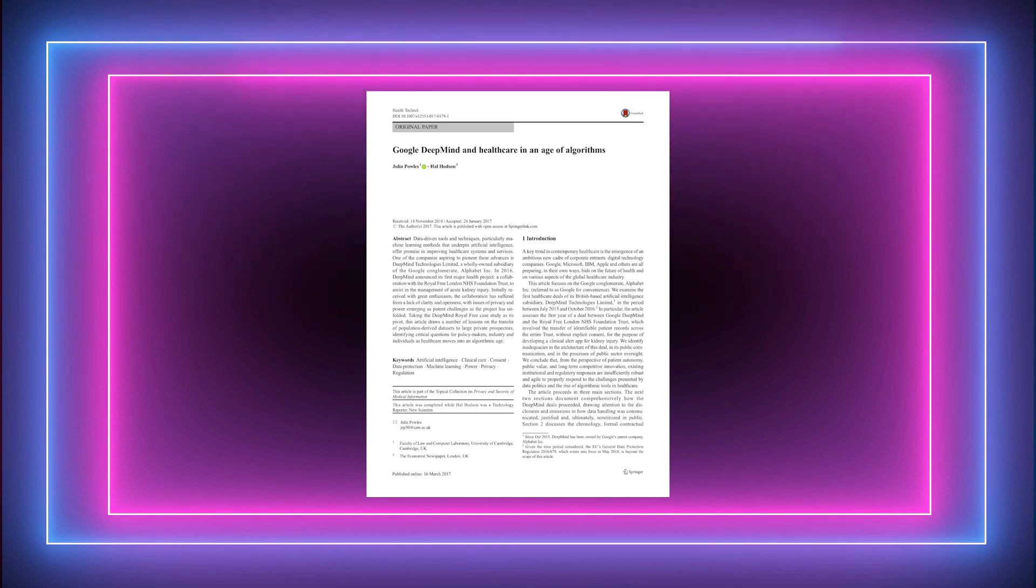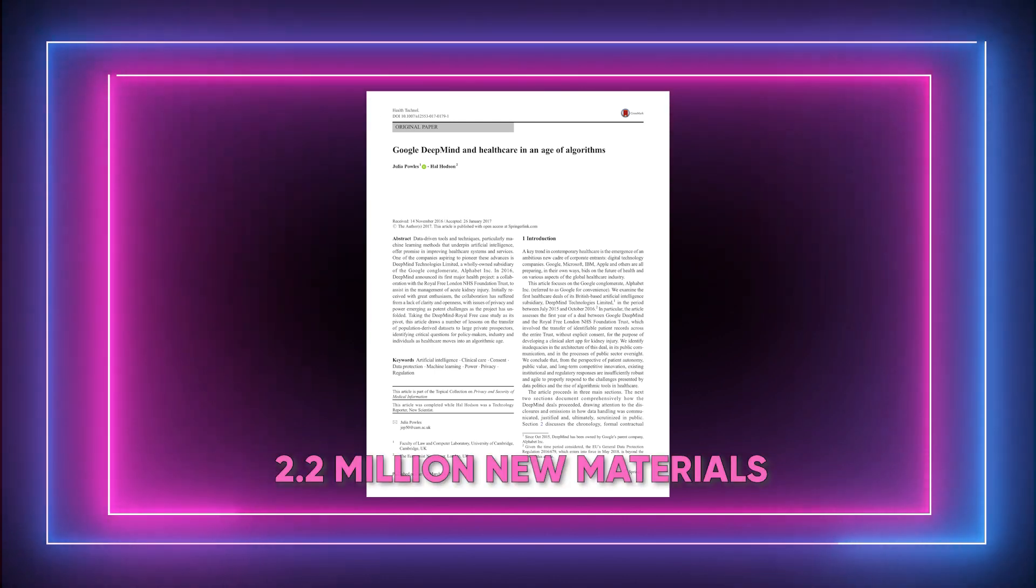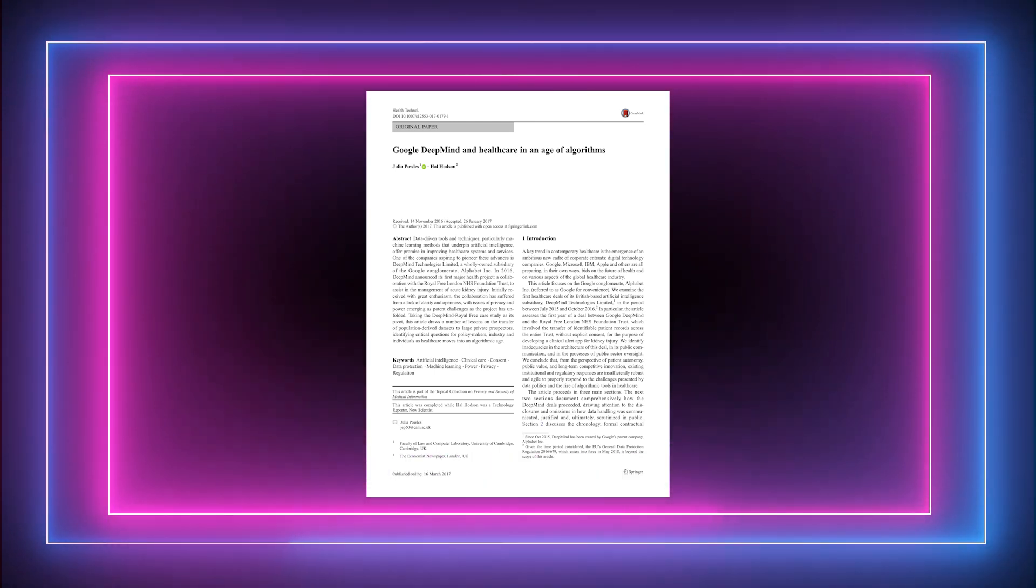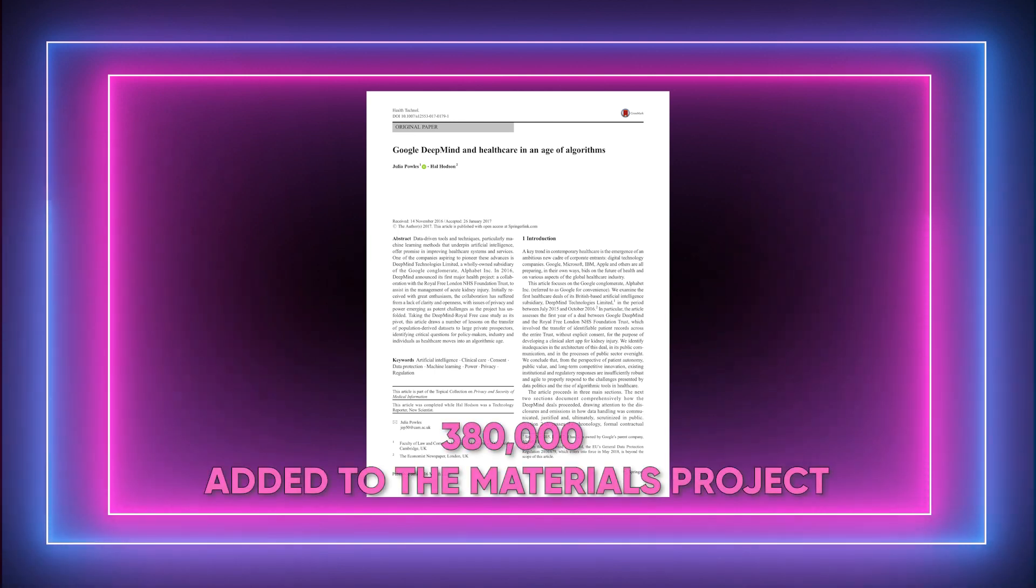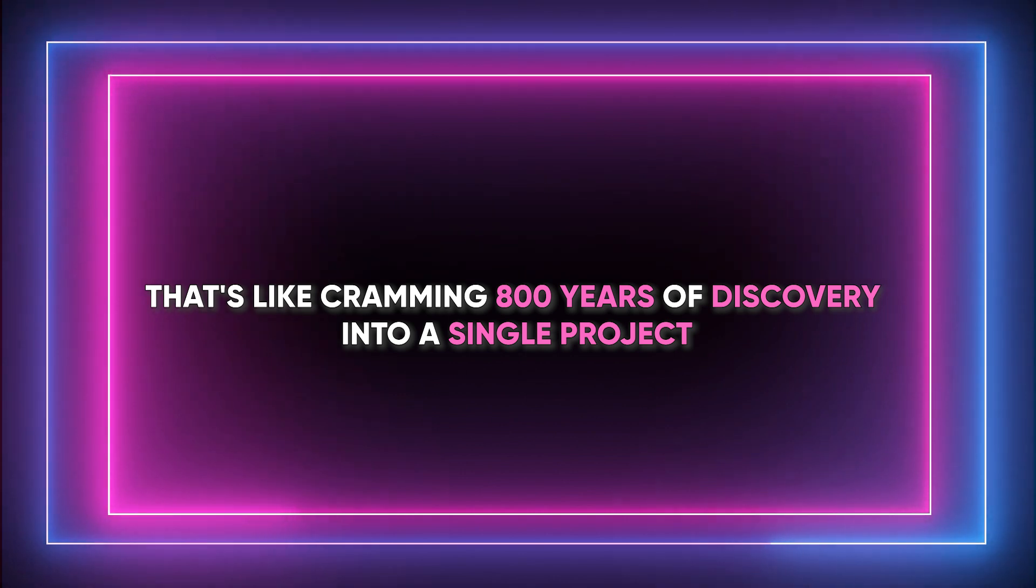Here's where it gets really cool. In a recent paper, Google DeepMind and their buddies showed off what GNOME's been up to. They had it predict structures for over 2.2 million new materials, including 380,000 added to the materials project. That's like cramming 800 years of discovery into a single project.